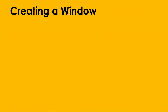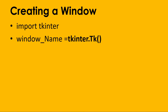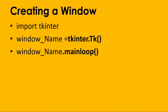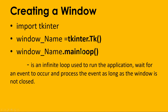In creating windows or GUI in Python using TKinter, we need to first import TKinter. Then we're going to use the TK method. For the window name, you can use any variable. Then we're going to use the mainloop method. This method is used as an infinite loop to run the application, wait for an event to occur, and process the event as long as the window is not closed.